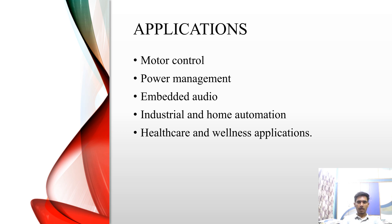Moving on to the applications of ARM Cortex. The ARM Cortex can be used in motor control, power management, and embedded audio. ARM Cortex is used in industrial and home automation such as microwave ovens, refrigerators or washing machines. We can use ARM Cortex in healthcare and wellness applications. Some other applications include automotive, data communication and industrial control. In industrial control applications, simplicity and fast response are key factors. The Cortex-M3 has low interrupt latency so it is best suited. In consumer products, the Cortex-M3 is a small, highly efficient, low-power processor and supports MPU, enabling complex software to execute while providing robust memory protections.